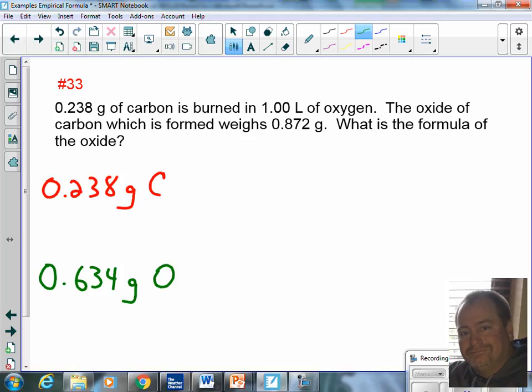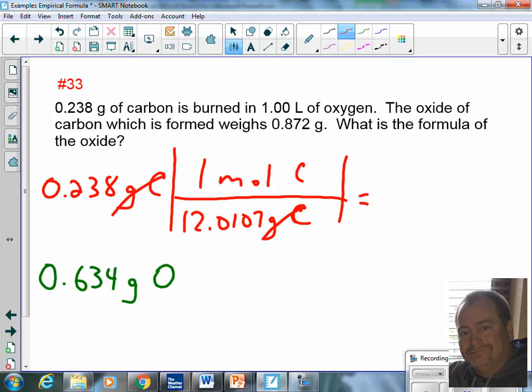So this is a little bit different because I didn't have percentages. I need to take the masses that I was given in the problem. Once I have my masses though, it's the same thing. I need to flux the capacitor to moles. Carbon is 12.0107 grams per one mole. I get my grams of carbon to cancel to leave me with moles, so 0.238 divided by 12.0107 gives me 0.0198 moles of carbon.